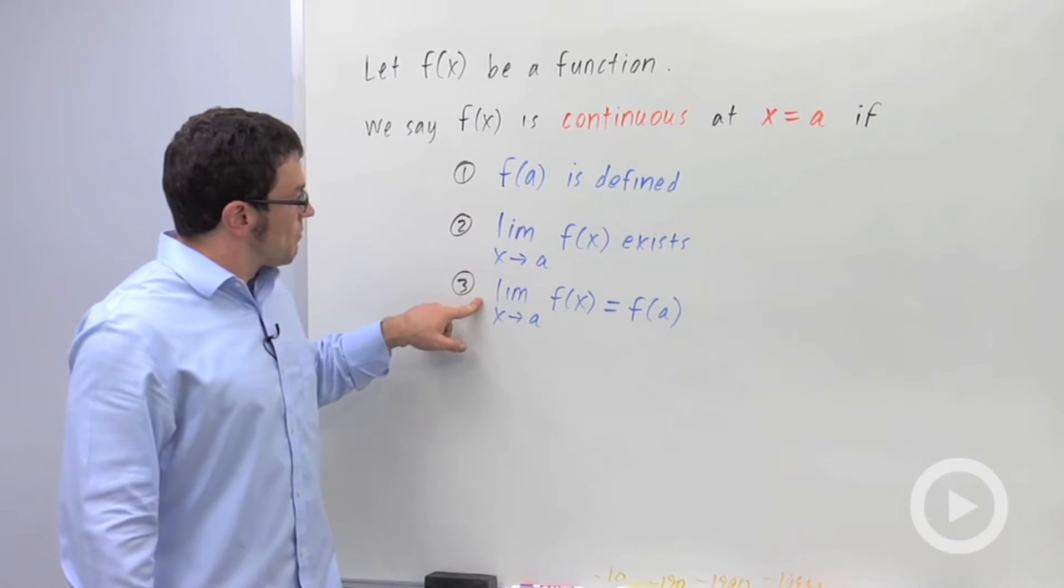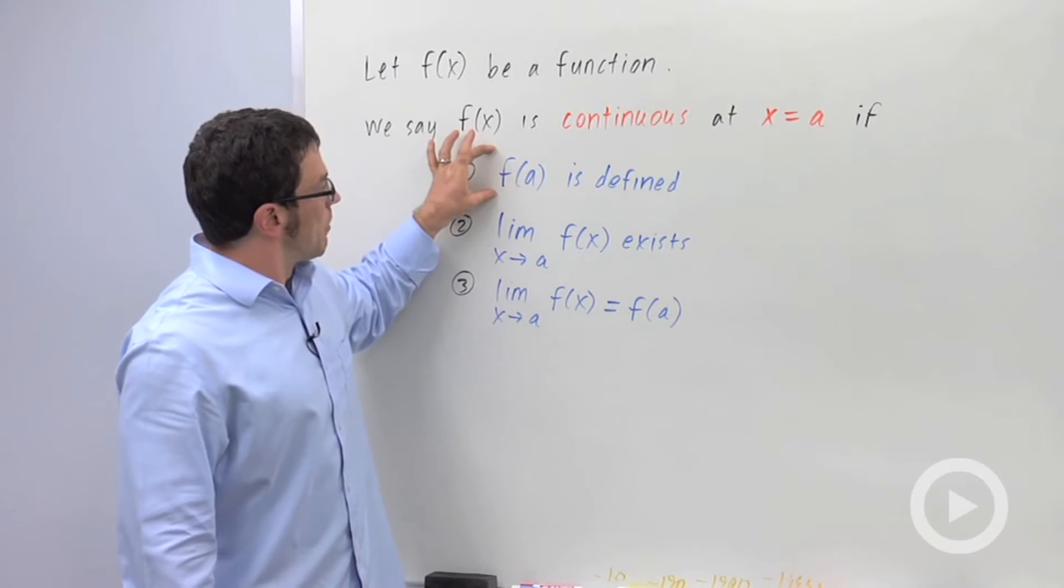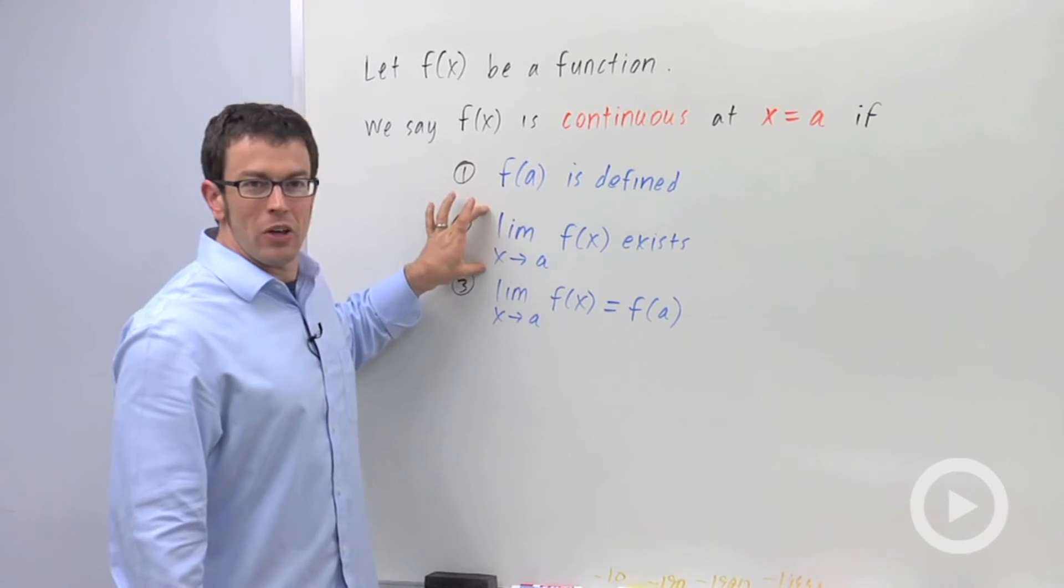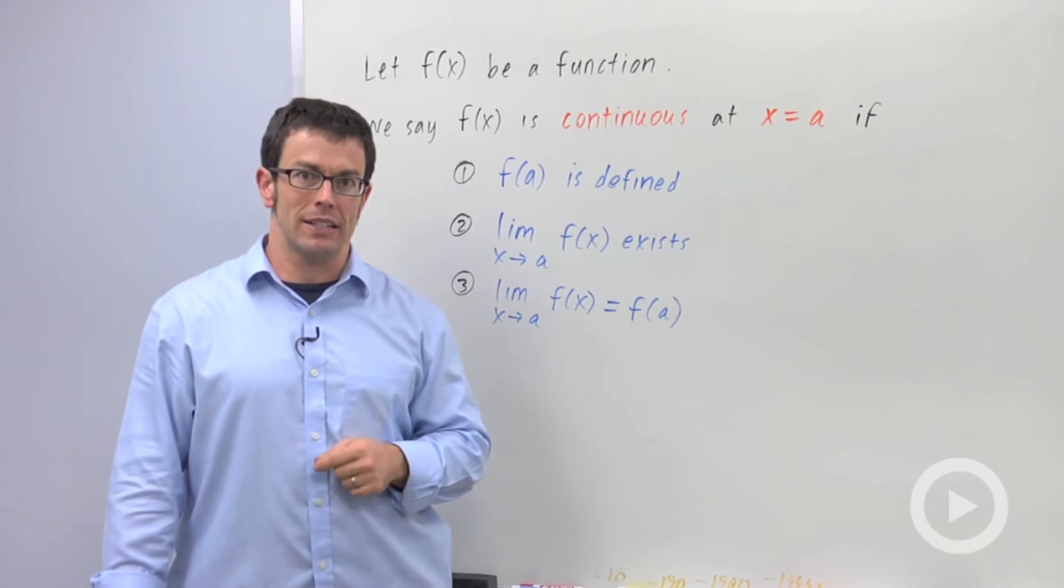And then three, the limit as x approaches a of f of x has to equal f of a. So this value in part one has to equal the value in part two. These are the three conditions for continuity of a function at a point x equals a.